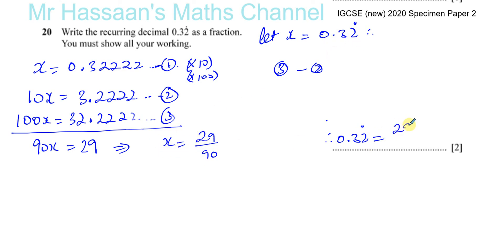So this must equal 29 over 90, and there we have the answer to this question. Okay, so that's how we deal with changing recurring decimals to fractions. Thank you for watching, and the other questions can be found in the playlist which has a link to it in the description box below.